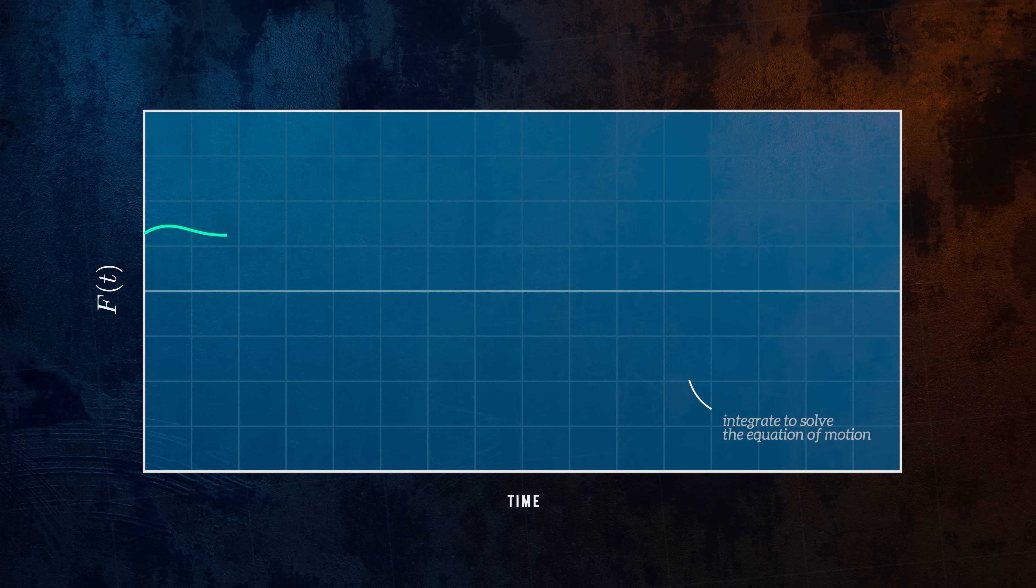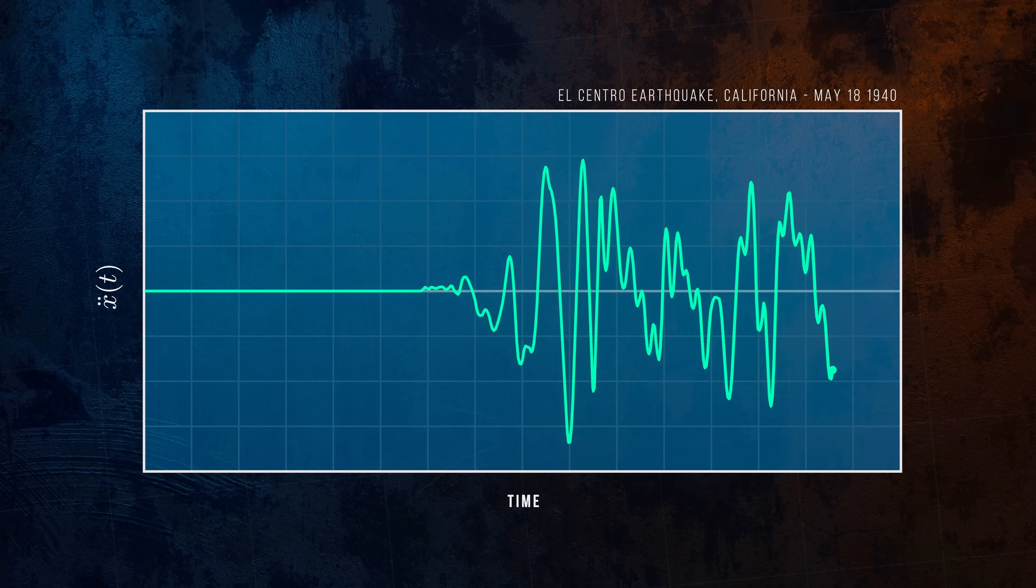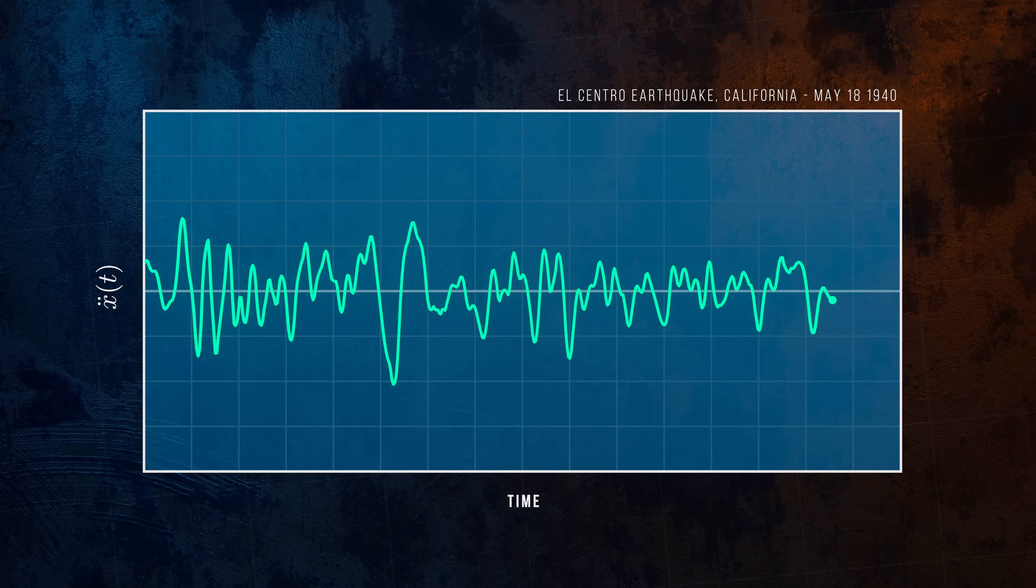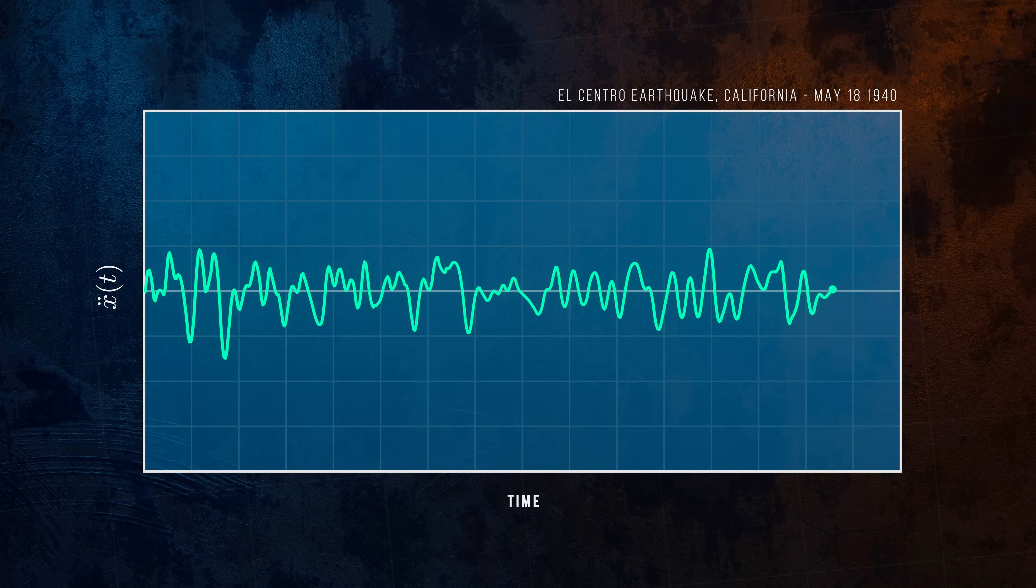Designing a structure to withstand seismic events is difficult because the loading caused by an earthquake is random and can't be predicted ahead of time. And so engineers have to use special probabilistic techniques, like the response spectrum method, to design structures to withstand seismic loads.